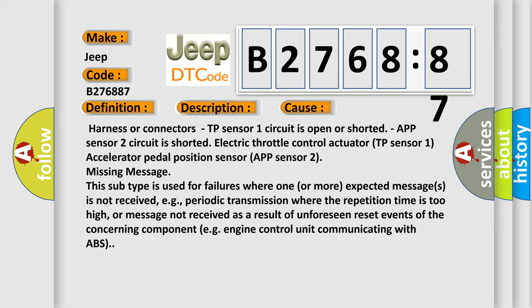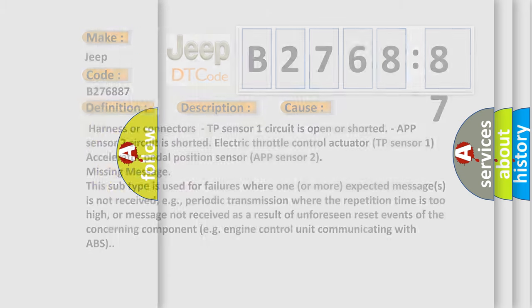This diagnostic error occurs most often in these cases: Harness or connectors TP sensor one circuit is open or shorted. APP sensor two circuit is shorted. Electric throttle control actuator TP sensor one accelerator pedal position sensor, APP sensor two missing message. This subtype is used for failures where one or more expected messages is not received, e.g., periodic transmission where the repetition time is too high, or message not received as a result of unforeseen reset events of the concerning component, e.g., engine control unit communicating with ABS.